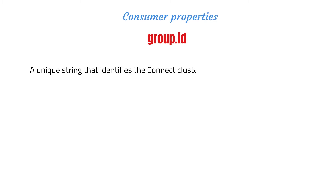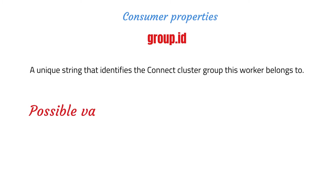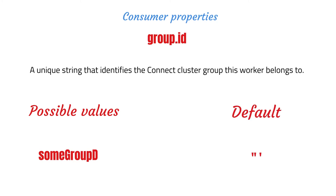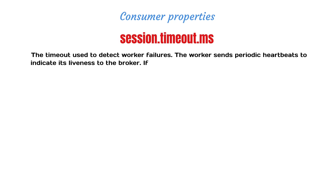But how do you configure consumers if you want to create a group of consumers? You should always configure your group ID, unless you are using the Simple Assignments API and you don't need to store offsets in Kafka. You can control the session timeout by overriding the session timeout ms value.